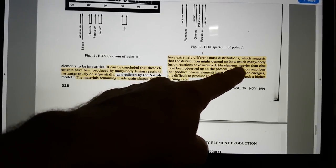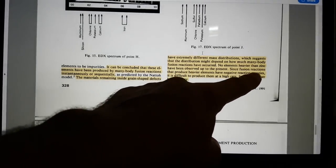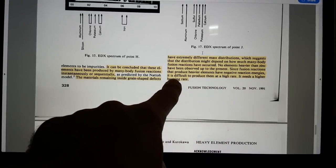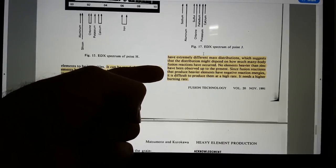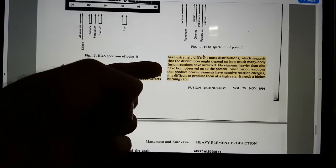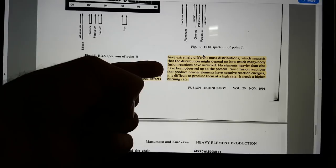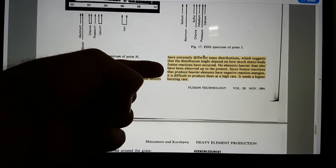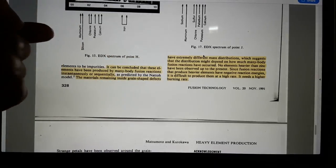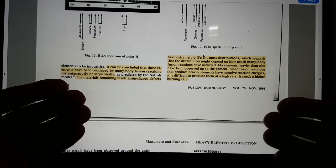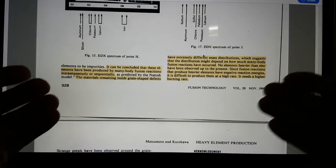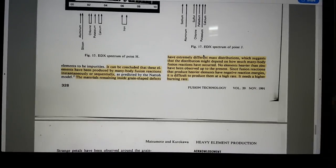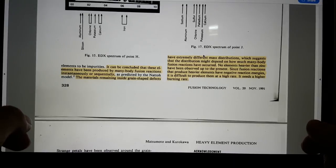And this is also very interesting. No elements heavier than zinc have been observed up to the present since fusion reactions that produce heavier elements than zinc have negative reaction energies. It is difficult to produce them at a higher rate. It needs a higher burning rate, right? So the heaviest element we typically saw in an aluminium sample from Hutchison, which you will see when we look at the analysis from synthesis tech later this month, is zinc. And here we have a reason from a nuclear scientist why that is, the fusion reactions that produce heavier elements have negative reaction energies. Moreover, when we think about the work of Suhas Ralkar, that produced apparently lead, zirconium, niobium, and these do obviously have a lot higher atomic numbers than zinc. And so the suggestion is there was a much higher burning rate or somehow much more energy was being put into assembling those nucleons.